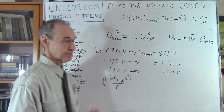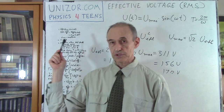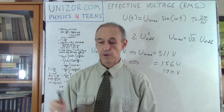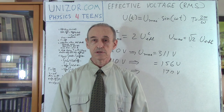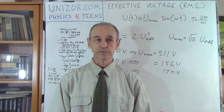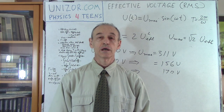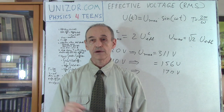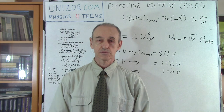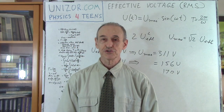I suggest you read the text accompanying this lecture on unizor.com. Go to the website, choose the Physics for Teens course — it's in the chapter called Electromagnetism, then under AC, you have the properties of alternating current. This is one of those lectures. Thank you very much, and good luck.